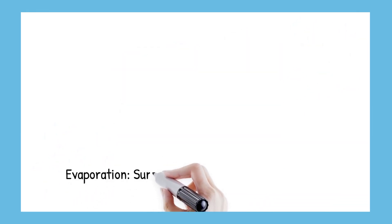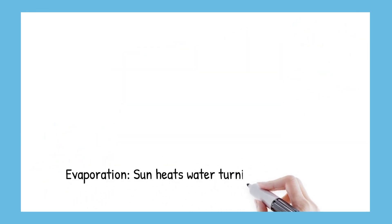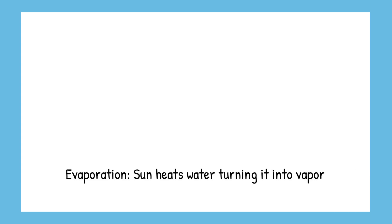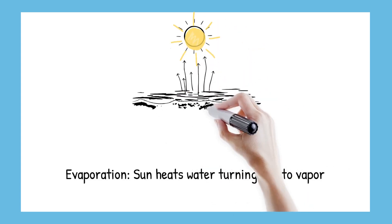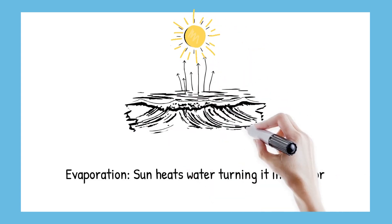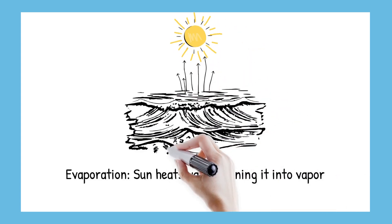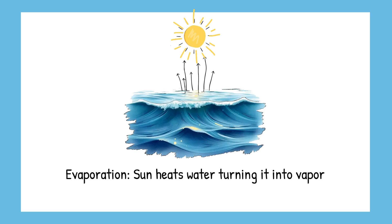First, when the sun shines on water in lakes, oceans, or rivers, it heats it up. The water turns into invisible gas, called water vapor. This step is called evaporation.